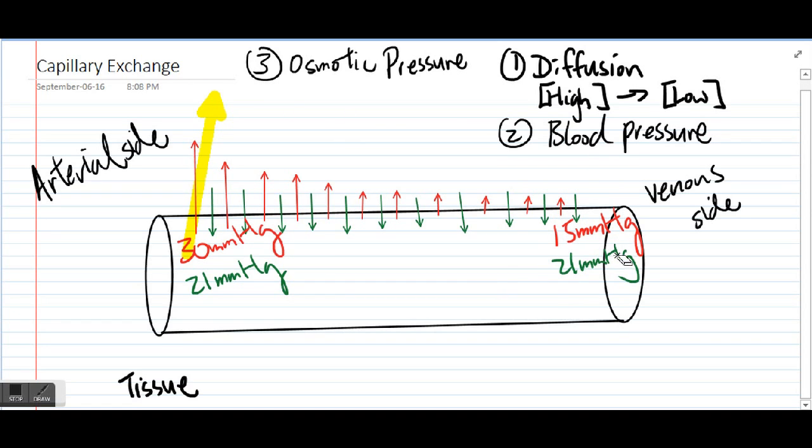However, on the venous side, as you can see, the osmotic pressure is now greater than that of the blood pressure. And so overall, fluid is going to reenter the blood vessels.